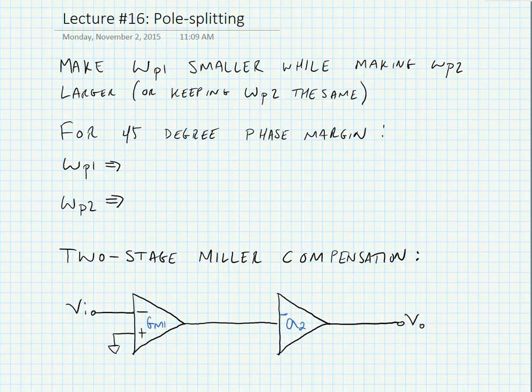In our last lecture we were looking at stability and feedback and we saw that for a single stage amplifier that the amplifier with only one pole is inherently stable. If we add a second stage we add a second independent pole.